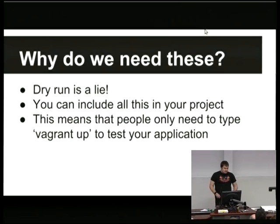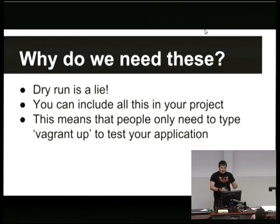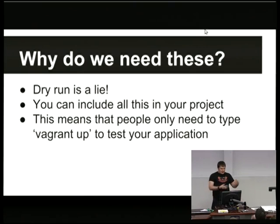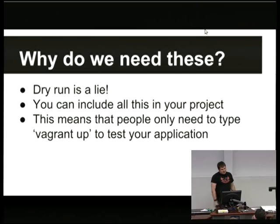So the way to solve this, obviously, is to use Vagrant, which lets you actually spin up a machine, deploy the old version of the config, deploy the new version of the config, and see what changes were actually made — not what changes it thinks are going to be made.